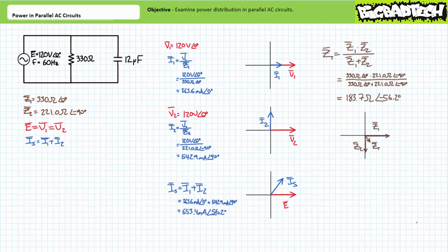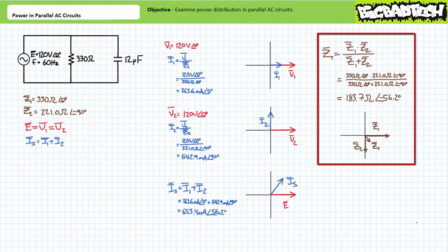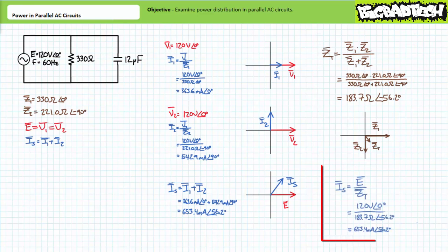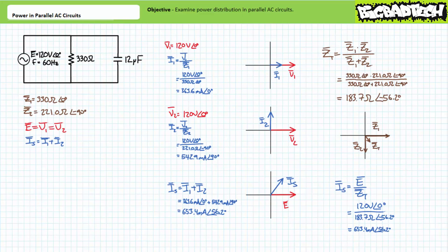As a means of checking these calculations, one could solve for total impedance, where the parallel combination of Z1 and Z2 is found to be approximately 183.7 ohms at an angle of negative 56.2 degrees. Note the total impedance does indeed appear to be primarily capacitive given the negative angle. Using this total impedance figure, another manipulation of Ohm's law also suggests source current will be 653.4 milliamperes at an angle of 56.2 degrees, matching the figure obtained previously with Kirchhoff's current law.